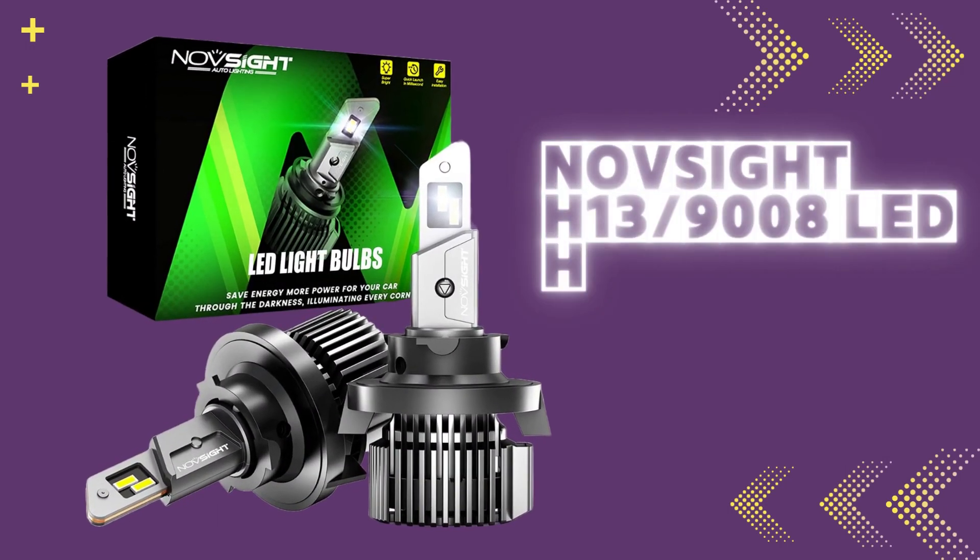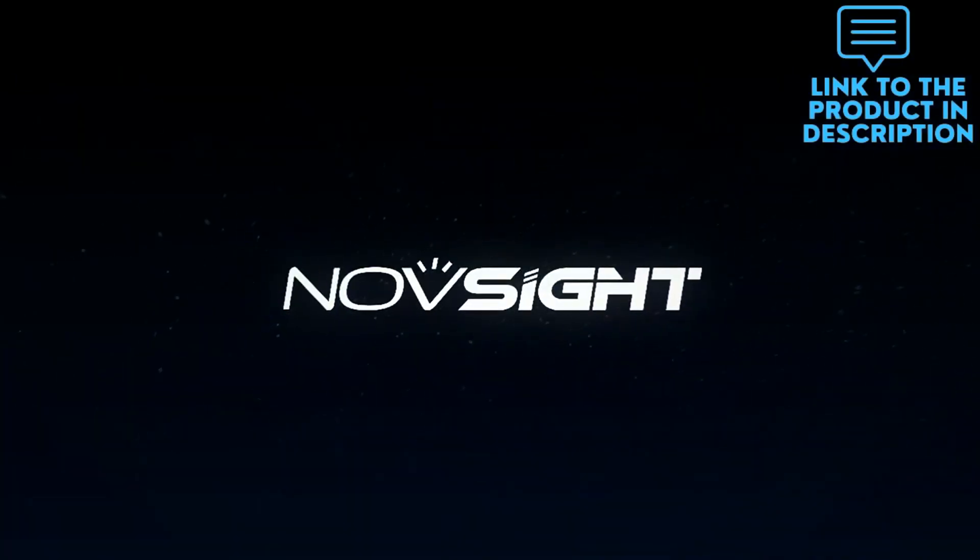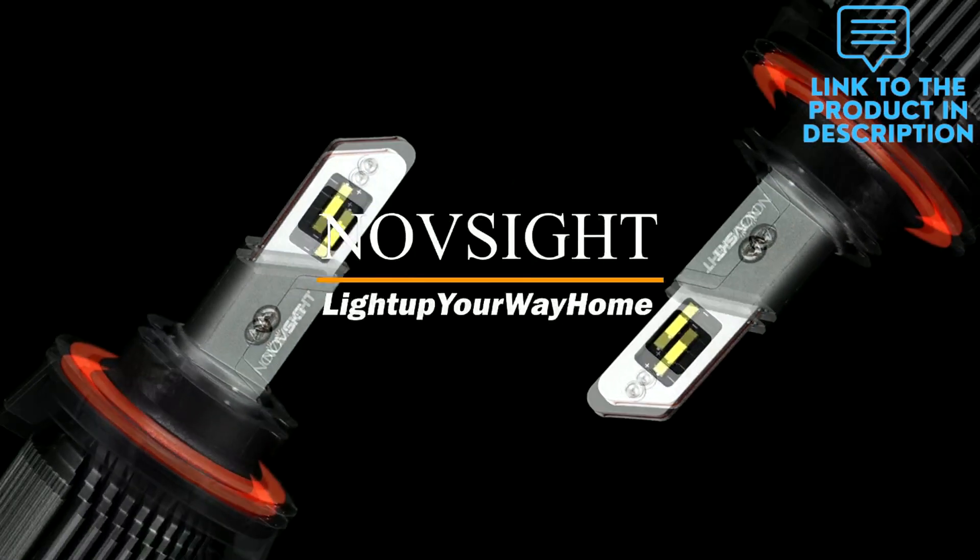Nausite LED headlights adopt the latest 80mm LED CSP chips, providing an excellent 20,000 lumens of output, spreading the light evenly on the road with zero dark zones.